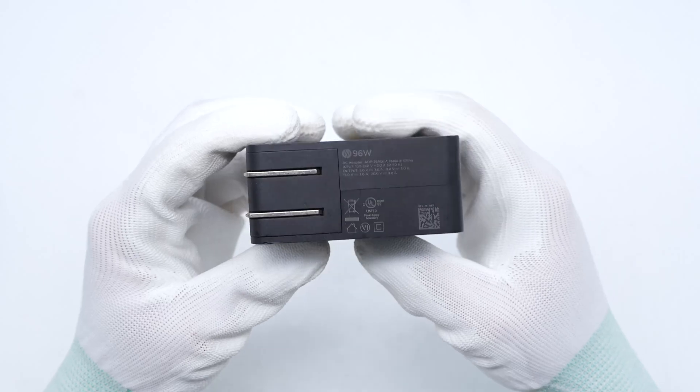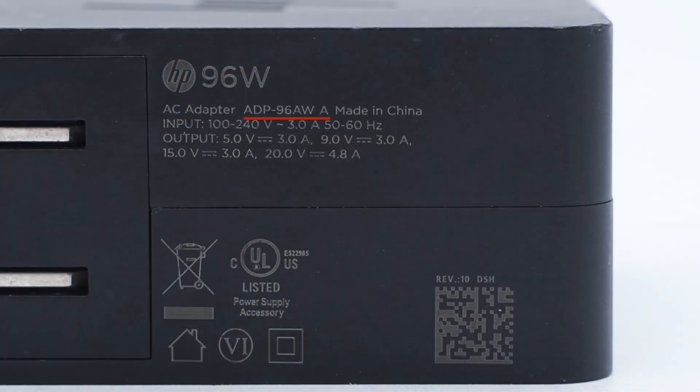The specs info is printed at the bottom. Model is ADP96AWA. It can support an input of 100 to 240 volts 50 or 60 hertz 3 amps. It can support outputs of 5 volts 3 amps, 9 volts 3 amps, 15 volts 3 amps, and 20 volts 4.8 amps. The maximum output is 96 watts. It is UL certified and has level 6 energy efficiency certification.